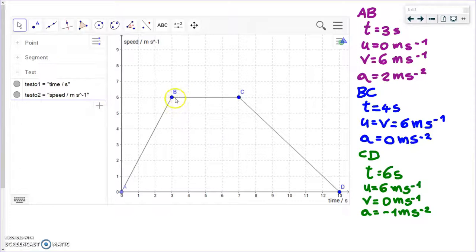Let's start with the path from A to B. The time taken from A to B is from 0 to 3 seconds, so it's 3 seconds. The initial speed, U, remember, U is the symbol for initial speed, and that is clearly 0. The speed in B is 6 meters per second. Now we can use these three quantities, V, U, and T, to calculate the acceleration. I'll leave it to you how you use these numbers to get our final result, which is 2 meters per second squared. That is the acceleration from A to B.